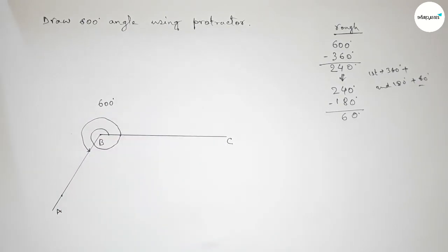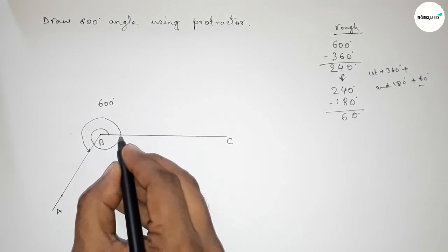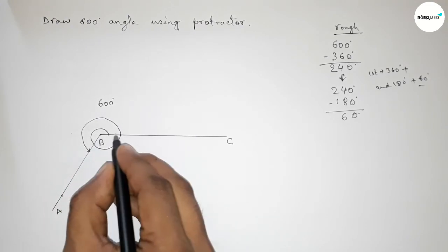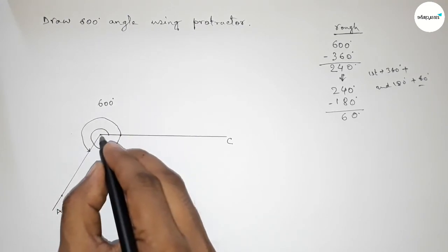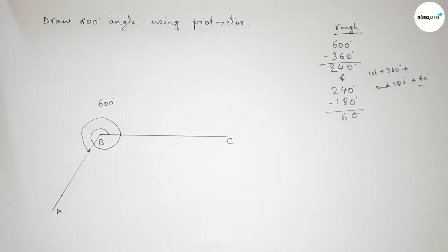Discussing this: this is 360 degrees, and if we draw a rough line, this is 180 degrees, and this is 60 degrees. So total 600-degree angle. That's all, thanks for watching.